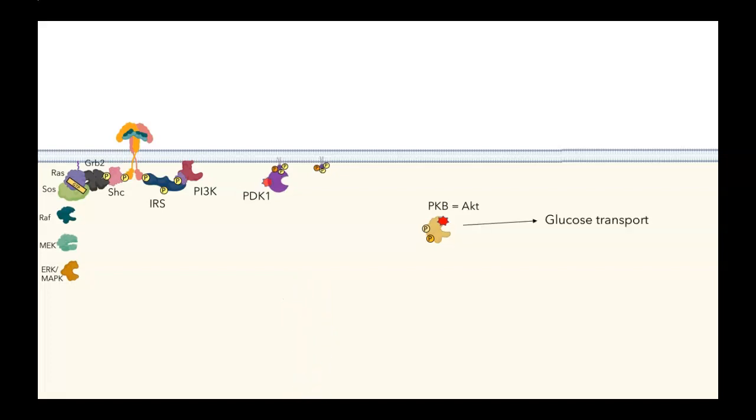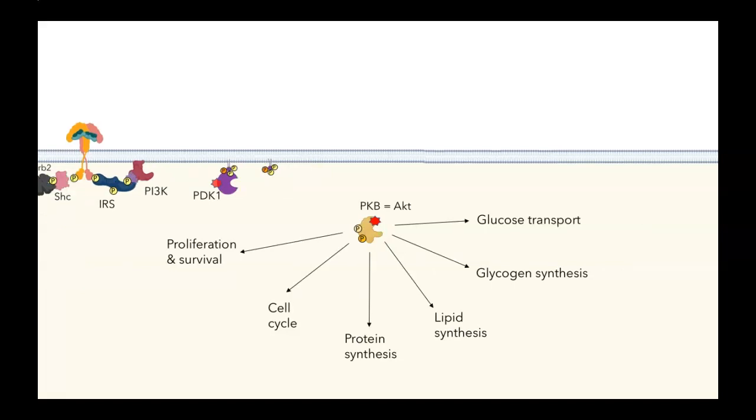Activated AKT is involved in stimulating glucose transport and glycogen synthesis and lipid synthesis. It can lead to protein synthesis. It can affect the cell cycle, and it can also lead to proliferation and survival. I'm not going to talk about all of these. I'm going to focus on the metabolic targets of AKT. Before leaving this slide, though, I do want to make a couple of points.